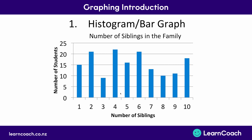For example, I might ask: how many students have six siblings? First, we look at six on the graph. Once we've identified that bar, we read the y-axis to find how many students there were — and there are 22. You just have to read this graph. That's the first graph.